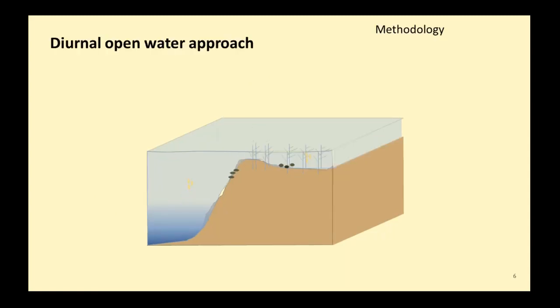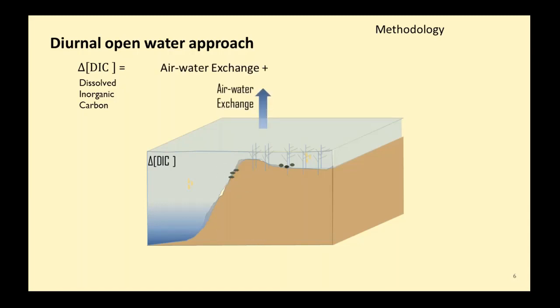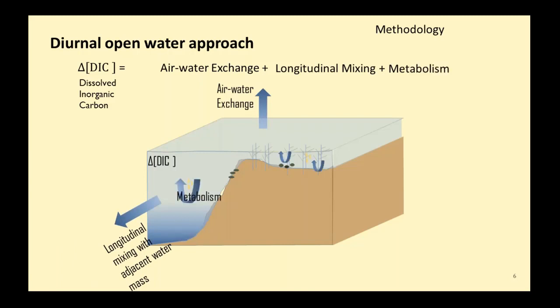The approach we use is the diurnal open water approach. I want you to imagine the estuary as a black box — whatever comes in should equal whatever goes out, plus the inner source like production and consumption. For this situation, the change in dissolved inorganic carbon concentration is caused by the air-water flux, the longitudinal mixing with the adjacent water mass, and the inner source — metabolism, or production and consumption — happening in the water column and on the salt marsh sediment but transported to the water.